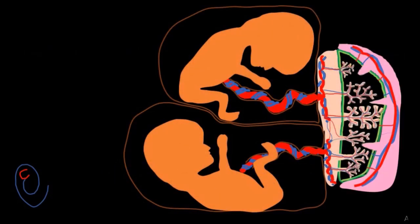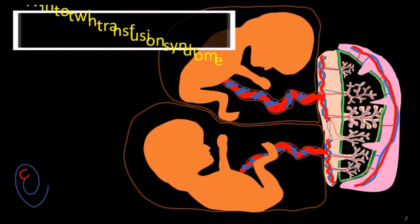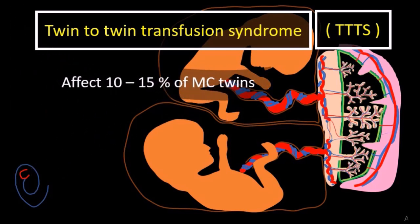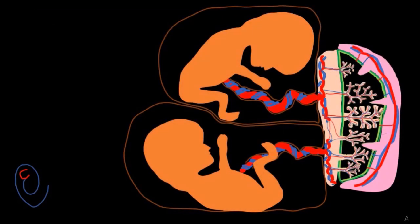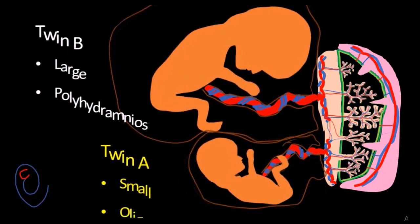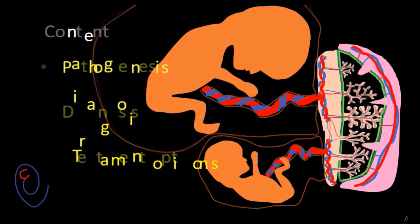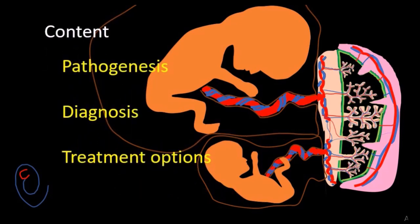Twin-to-twin Transfusion Syndrome, or shortly known as TTTS, is a serious condition that affects about 10-15% of monochorionic twins. In TTTS, one twin becomes large with polyhydramnios, while the other one is small with oligohydramnios. In this video, I will describe the pathogenesis, diagnosis, and treatment options of TTTS.